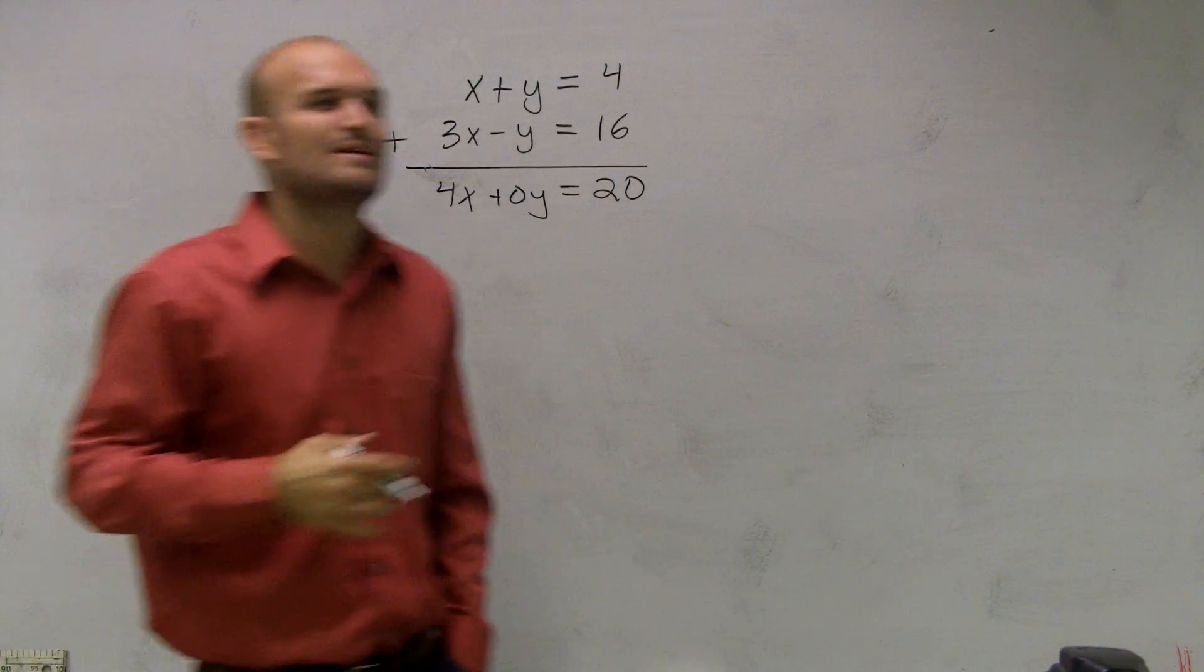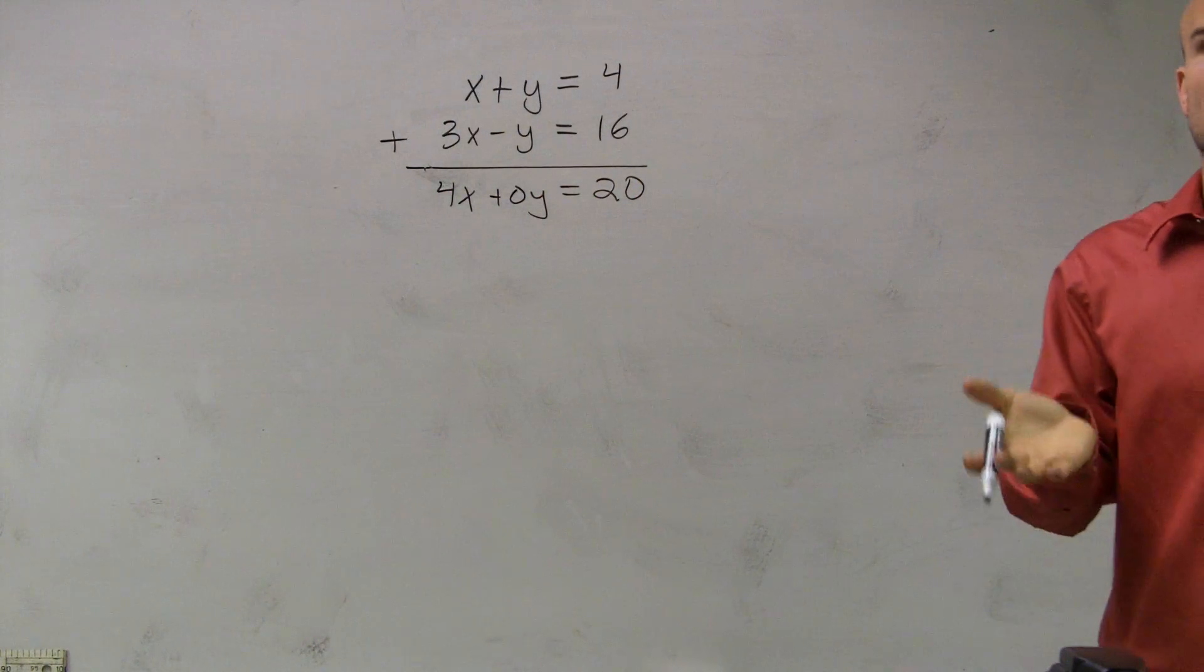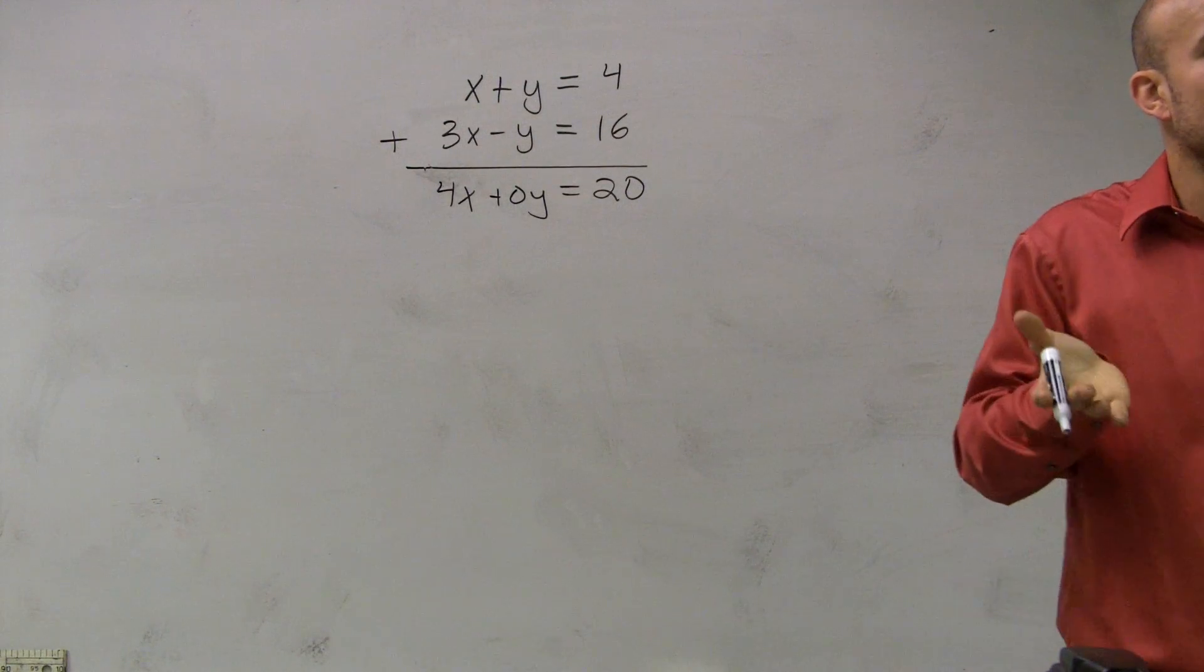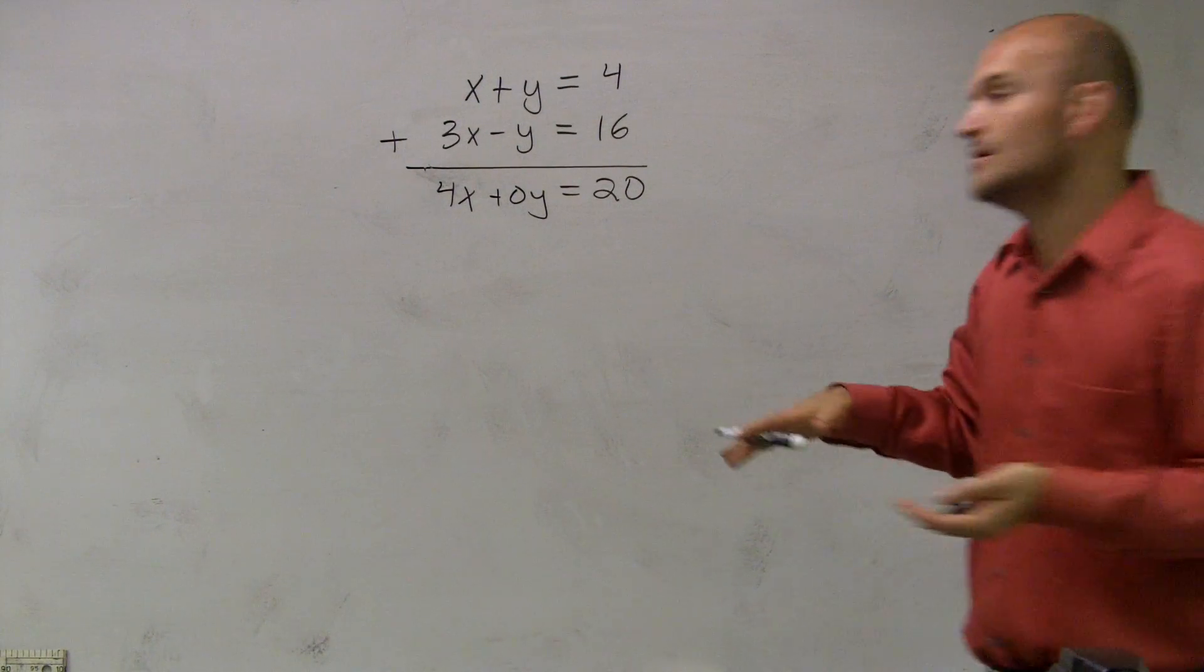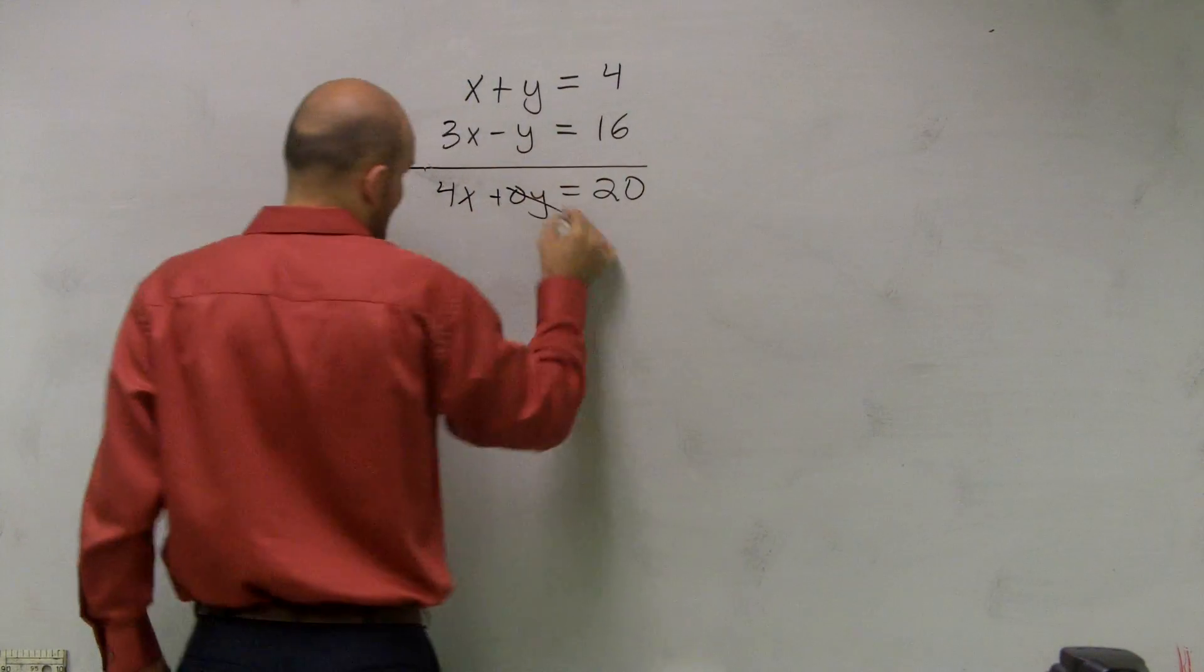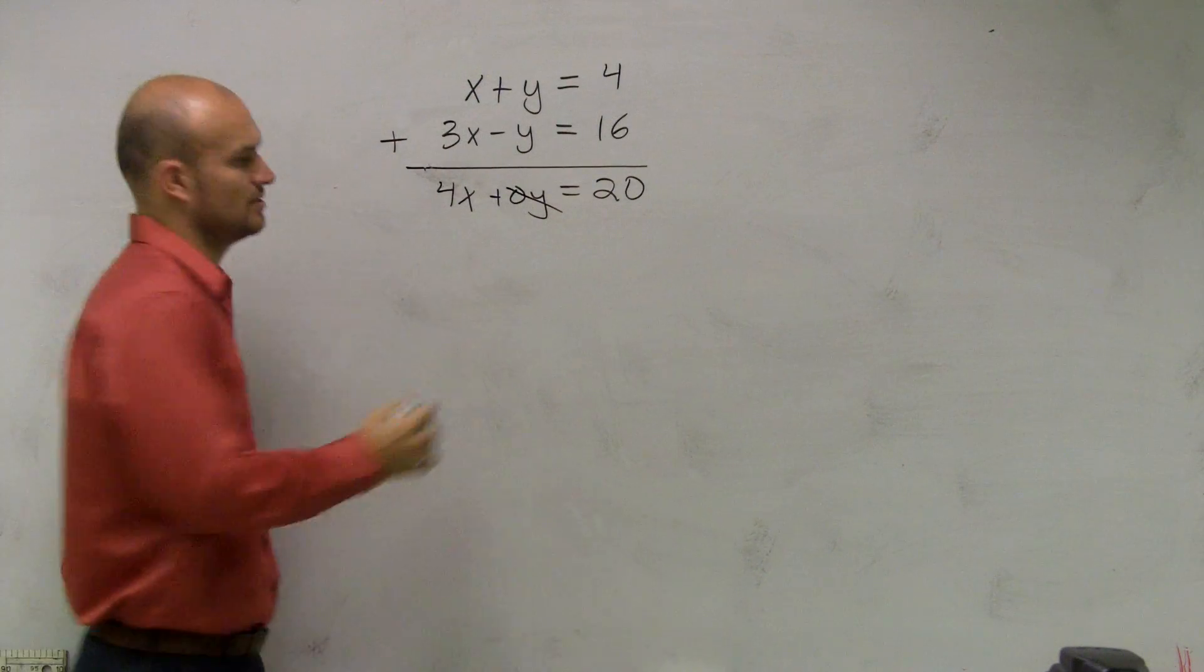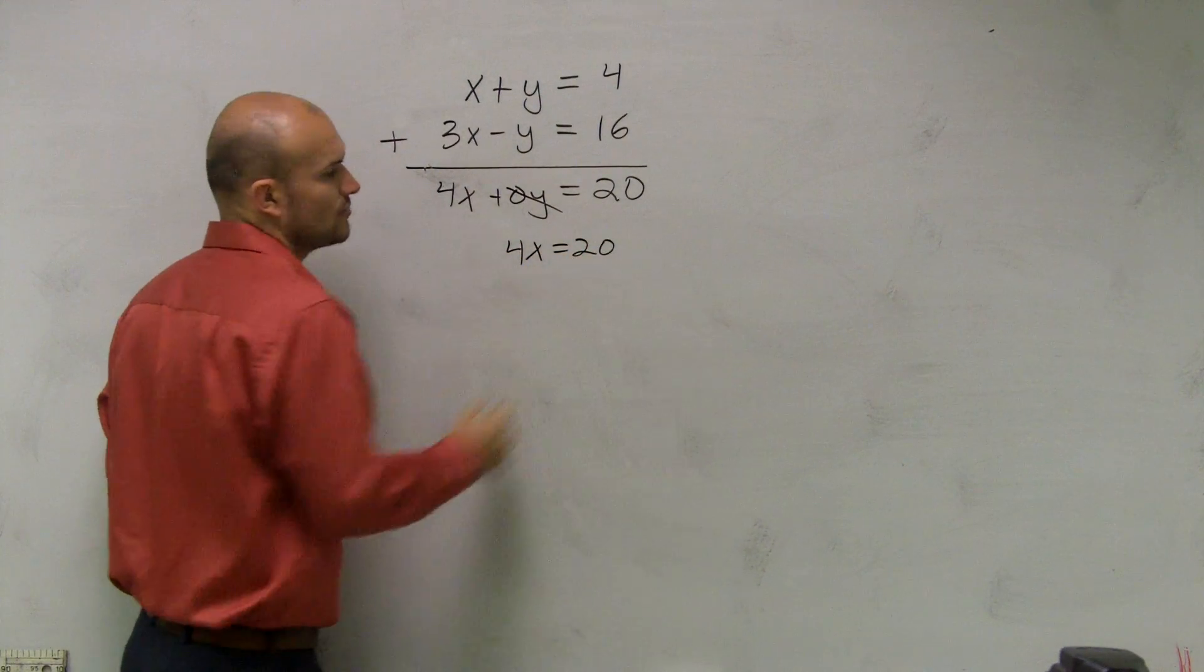Now, the important thing why we did this is when you add them up and they're the same value but one's positive, one negative, that gives you 0. So when I have 0 times anything, that eliminates that variable. So now I have 4x equals 20.